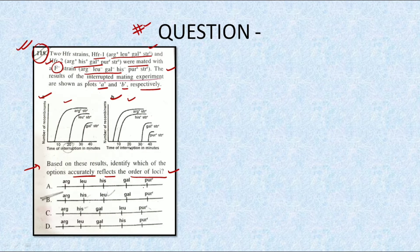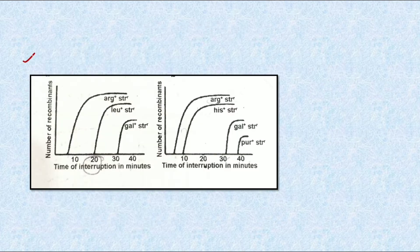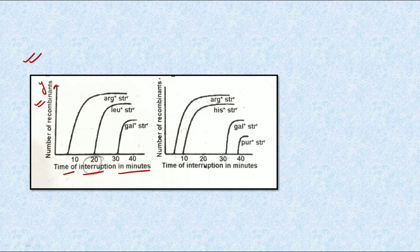Let us understand how to solve this question. This is the most important information given in the question. First, we need to understand the graph: on the y-axis we have the number of recombinants, and on the x-axis we have the time of interruption in minutes. The same applies to the other graph given.